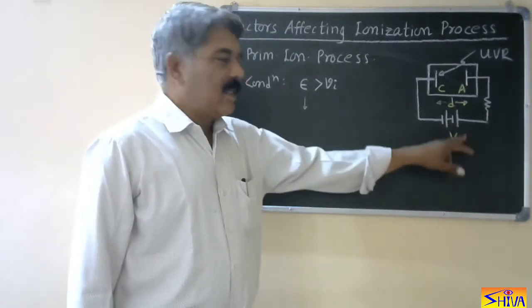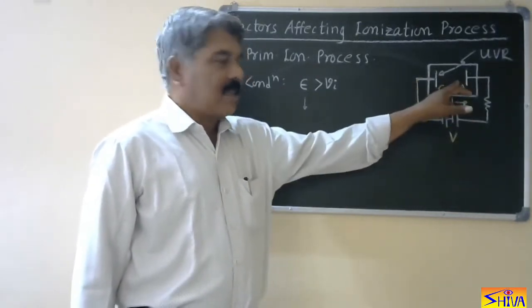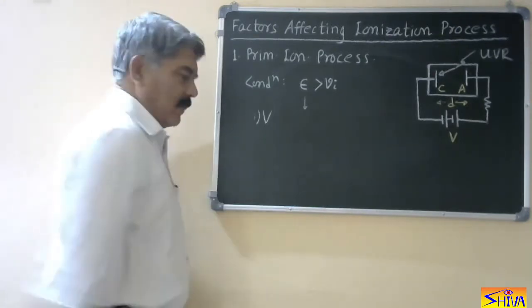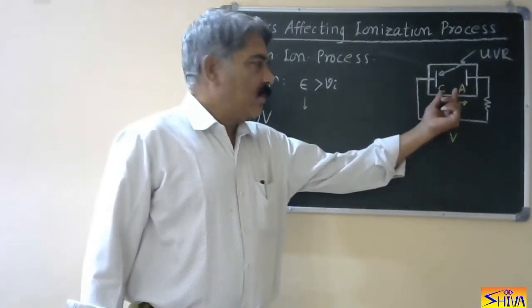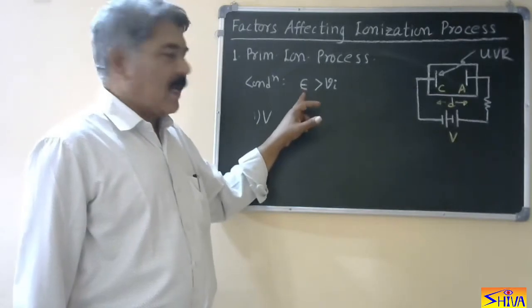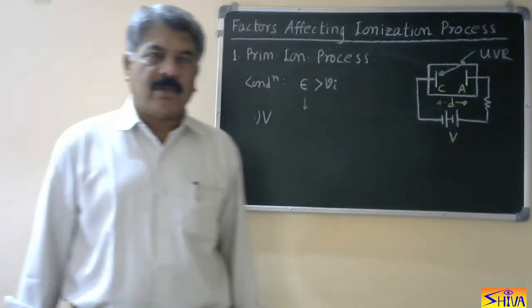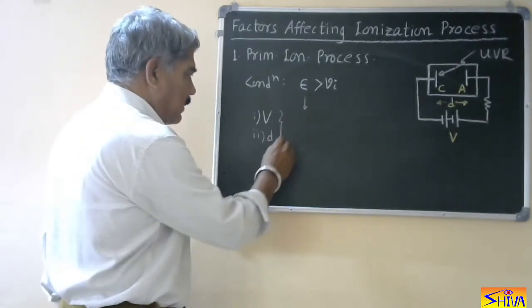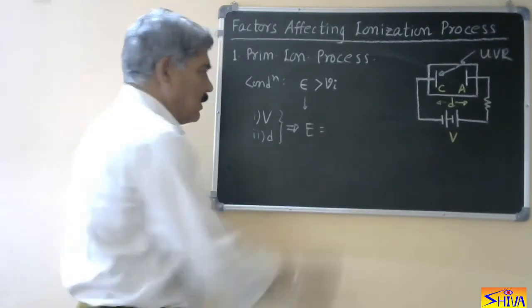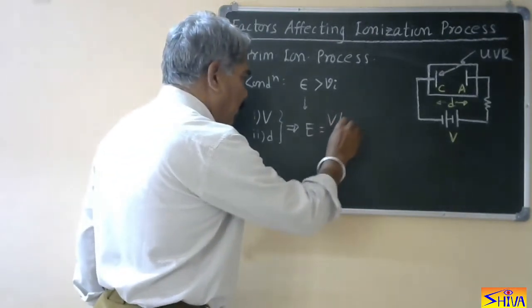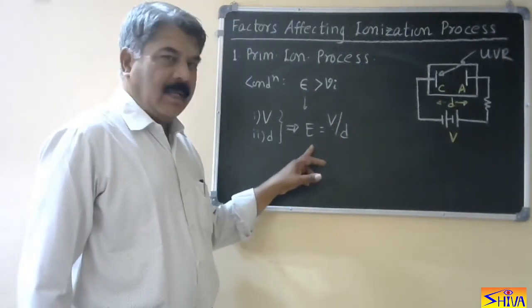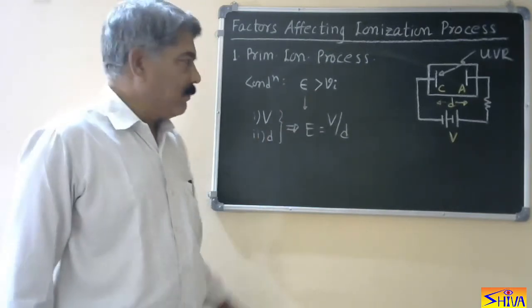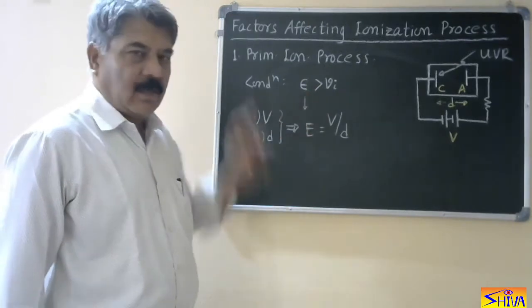The first factor is voltage V. If voltage is higher, the force of attraction for this electron towards the anode will be more, so it will have more kinetic energy. The second factor is D, the distance. For the same voltage, if we reduce the distance, the force of attraction increases, so there will be more kinetic energy and a higher probability of generating more electrons. Combining these two factors, we get E — the electric field — given by V divided by D. Higher V and lower D both result in more kinetic energy.